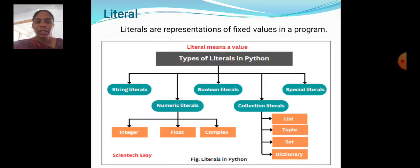Numeric literals have three divisions: integer, float, complex. Collection literals have four divisions: list, tuples, set, dictionary.